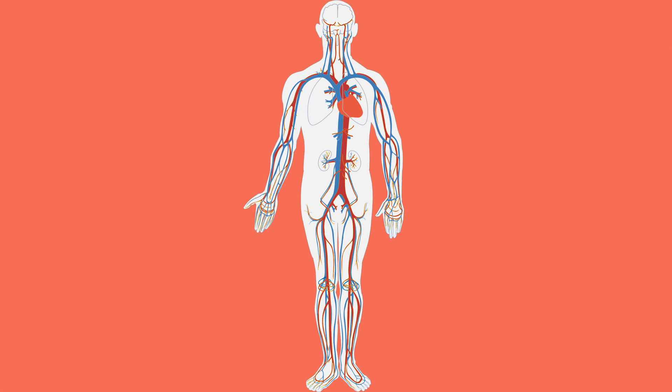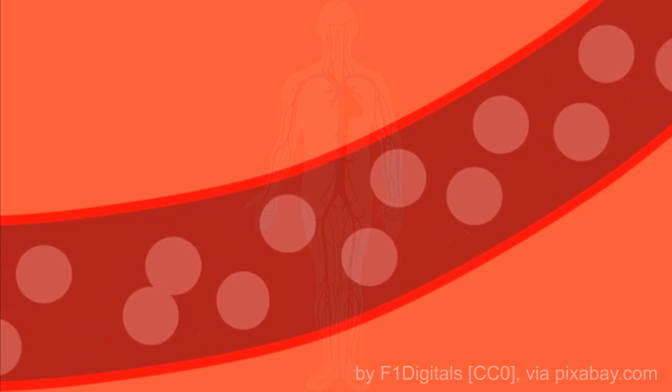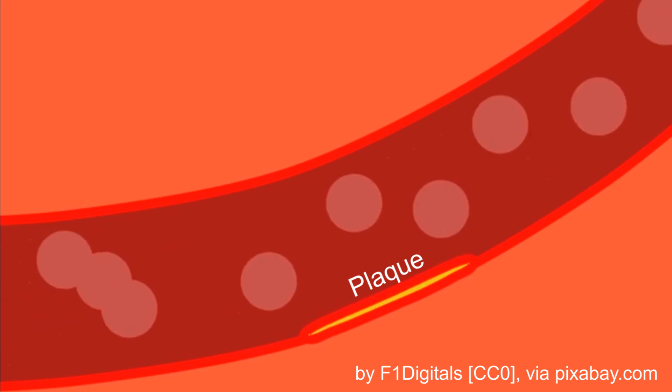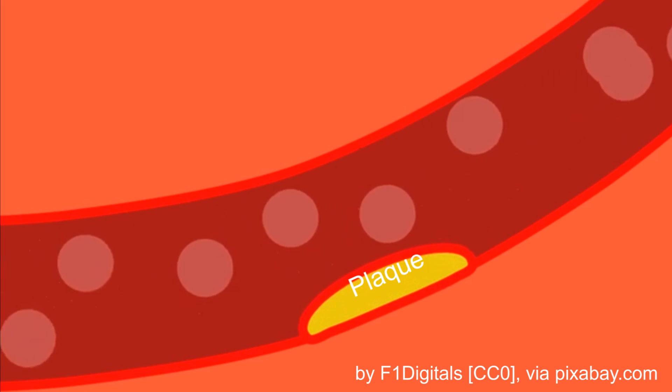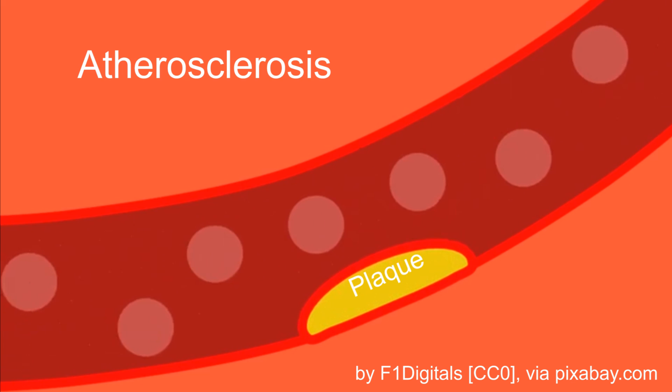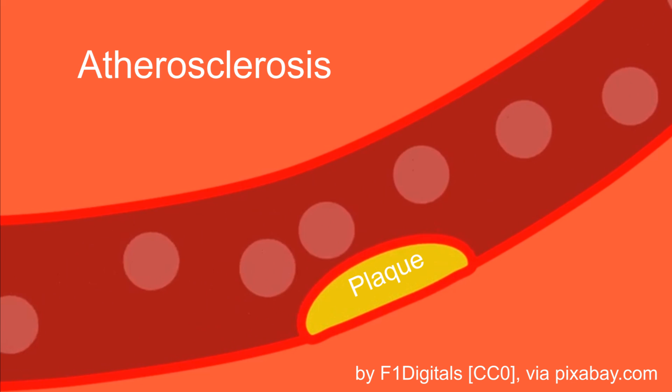But what if something goes wrong with your blood flow? One common heart disease is the buildup of fat and other materials from your blood in the arteries, called plaque. This buildup is known as atherosclerosis.